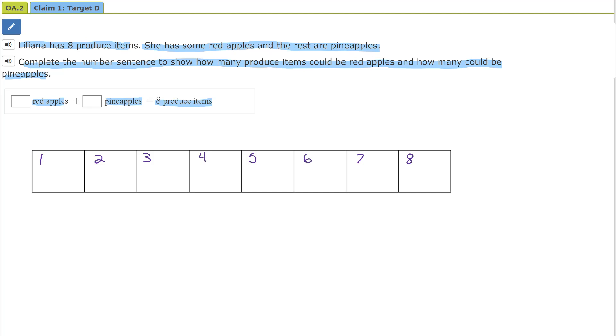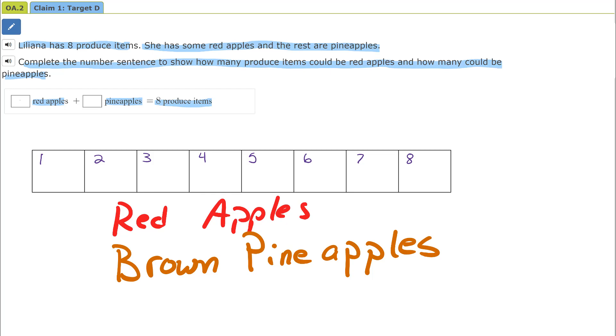In this problem we have red apples and we're going to have pineapples and we're going to call them brown pineapples. So we get to guess how many red apples we have and then we'll figure out how many brown pineapples. So I'm going to guess that we have three red apples.